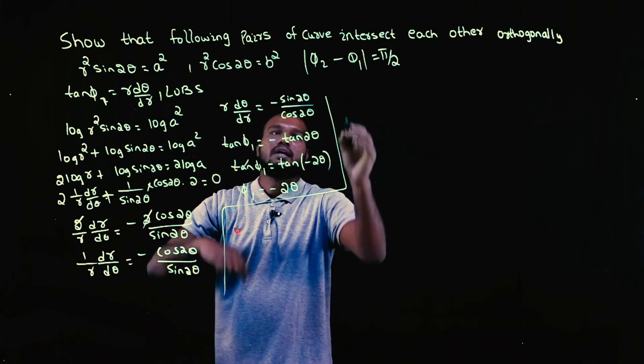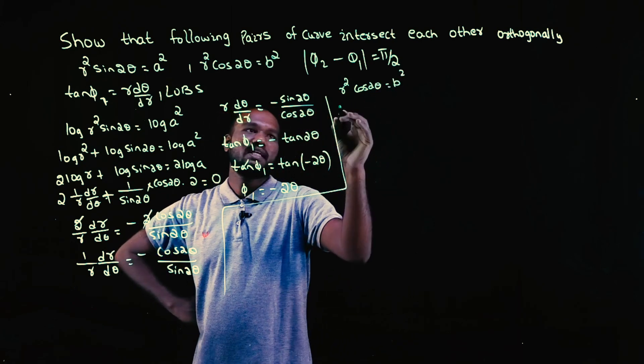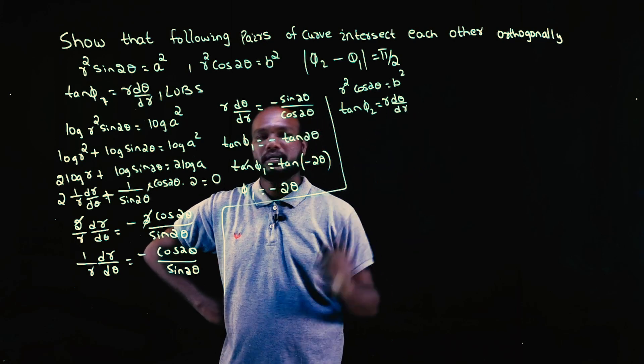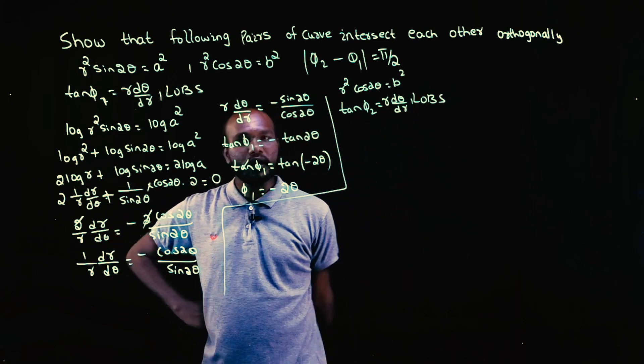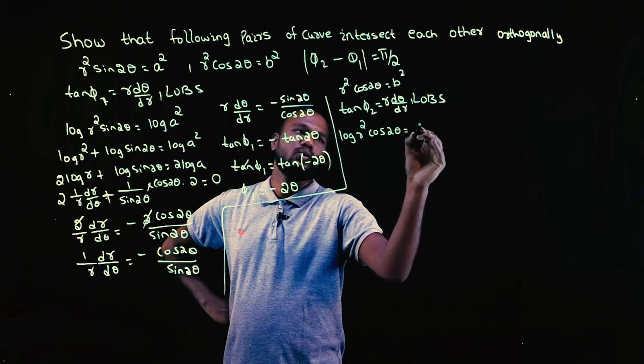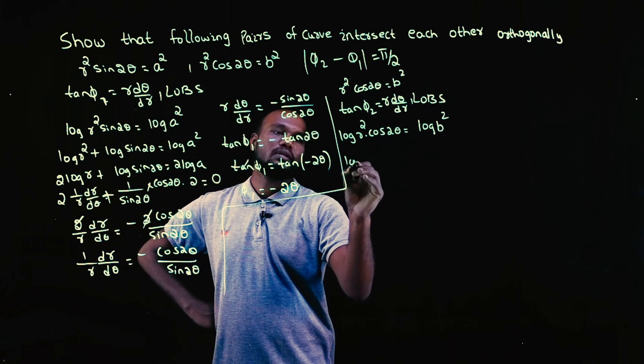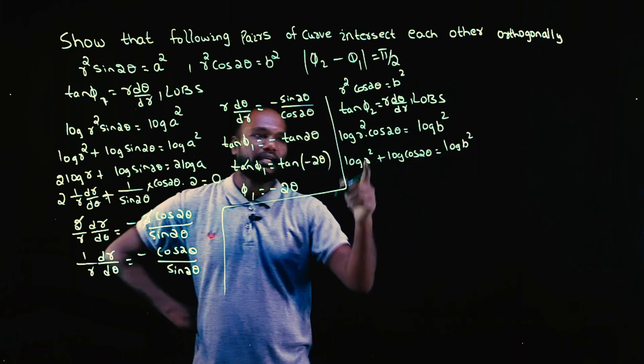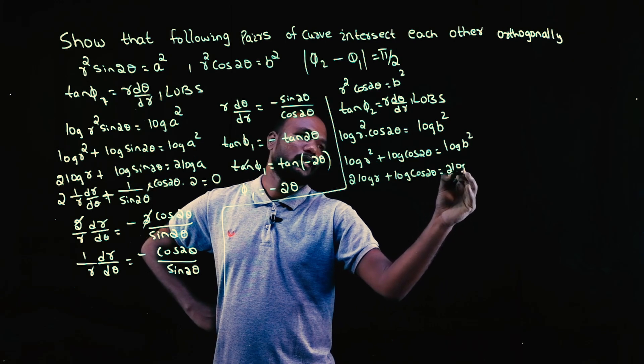Let's go to the second one. What is the second curve? r² cos 2θ is equal to b². Again, we have to find φ2. To find φ2 what we need? We need tan φ2. What is tan φ2? r into dθ upon dr. Can we directly see r? No, it is r² so we can take LOBS, log on both sides. So log r² cos 2θ is equal to log of b². Log a into b is log a plus log b. I can take this to front: 2 log r plus log cos 2θ is equal to 2 log b.